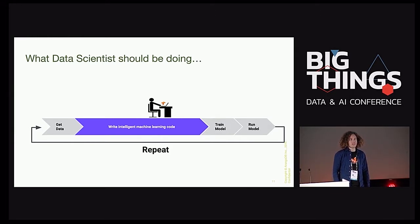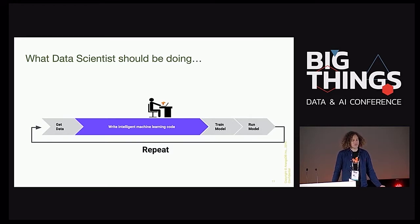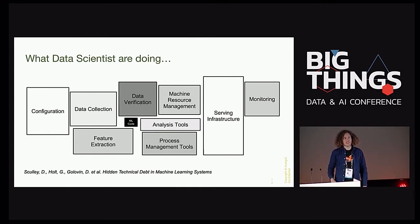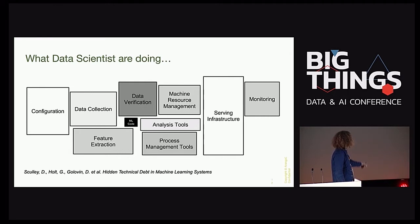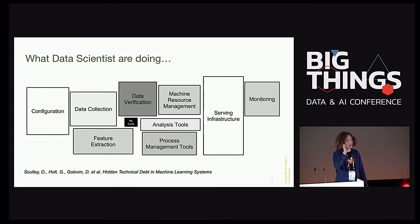When people start a new machine learning project, even in big companies, the naive view is: hire a data scientist, give them a laptop with TensorFlow, give them some data, they write a cool model, train it, and we're done. But in reality, this looks very different. This is from a Google paper — the machine learning code is just a small box in the middle. The real challenge is productionizing machine learning models, which involves all those bigger boxes around the small black box.